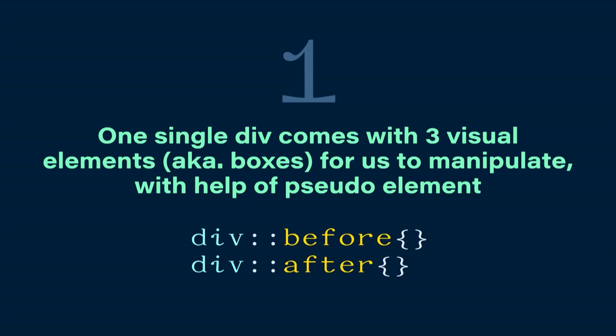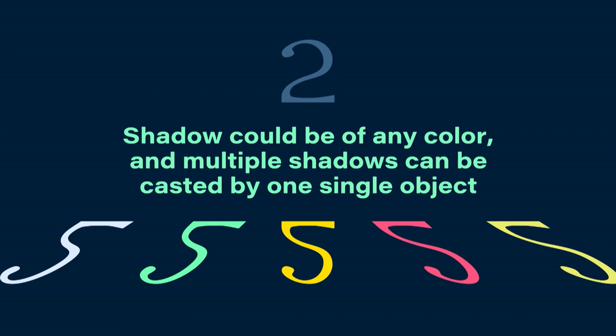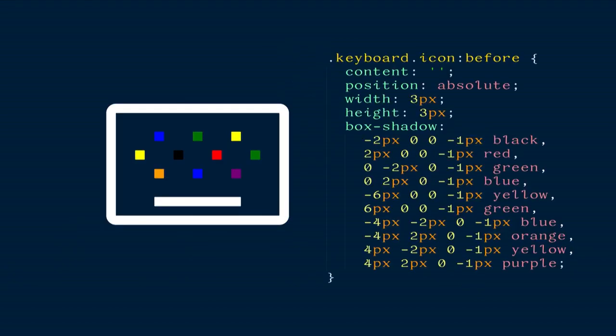I want to give a few points as the common knowledge ground before we dive into live coding, and I'm pretty sure you guys are all very sassy about CSS, so just bear with me for a second. The first thing I want to point out is one single div comes with three visual elements — a.k.a. three boxes — for us to manipulate with the help of pseudo-elements before and after. Second is that shadow could be of any color, and multiple shadows can be cast by one single object.